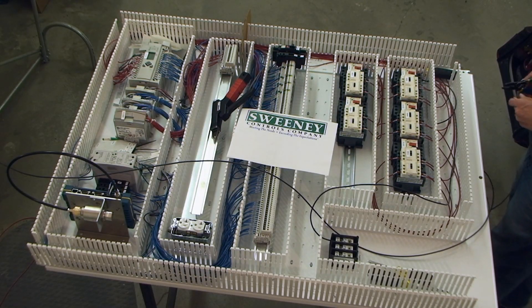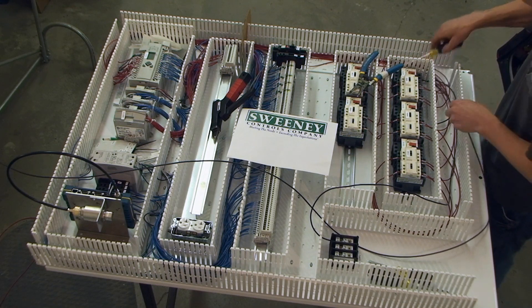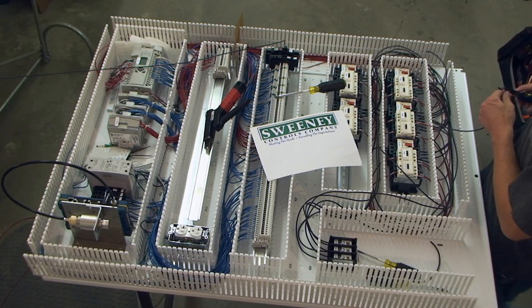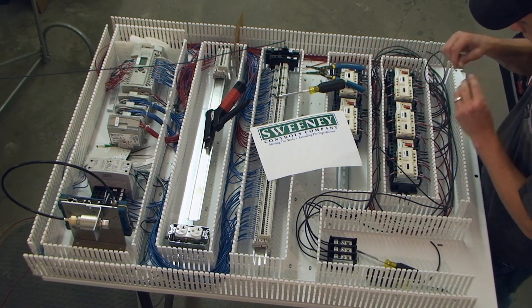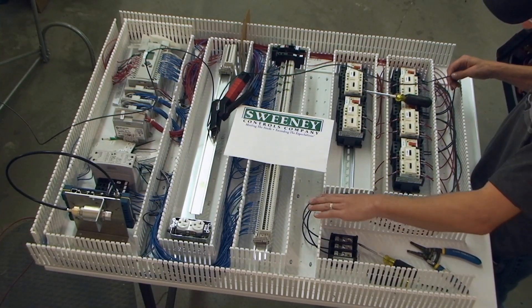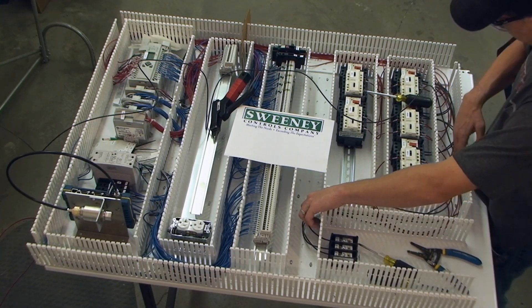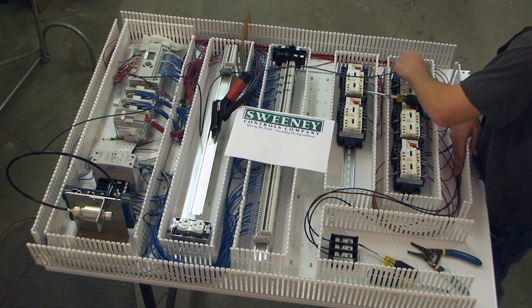Power wiring started. This panel has three-phase power. Each circuit protector and contactor will need all three phases run to each of them. The power will be run from a power distribution block. The wire is sized based on the overcurrent amp rating of the circuit.